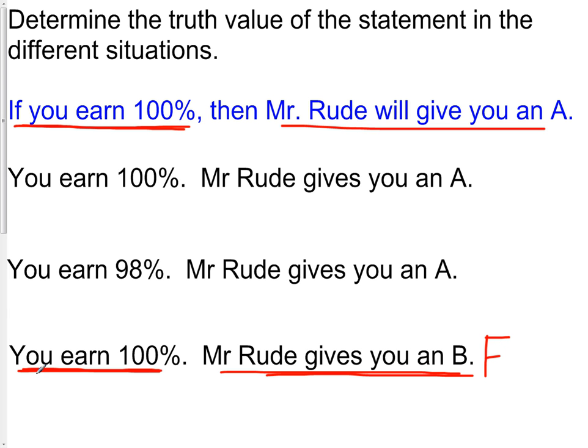When you get 100%, you should get an A. He gave you a B, so this is a false situation. If you have any questions about these, make sure to re-watch them, and feel free to ask me any questions you need to in class.